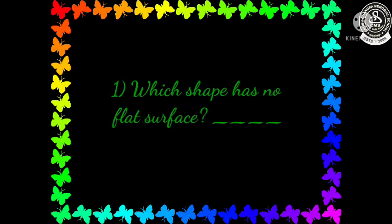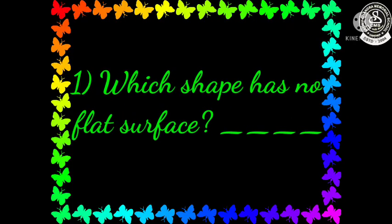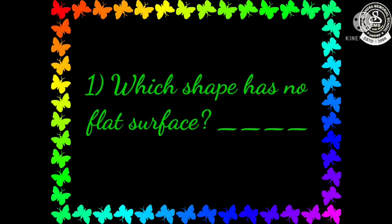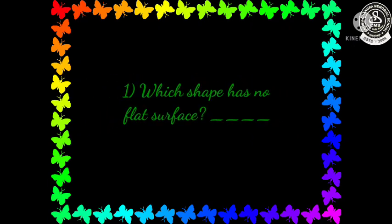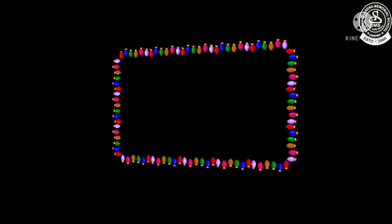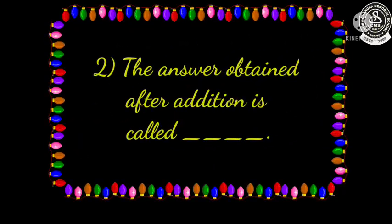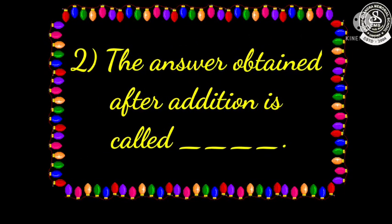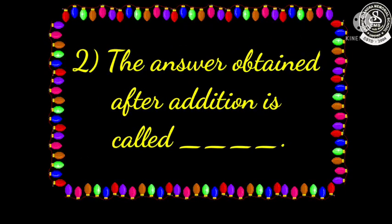Here is question number one: which shape has no flat surface — means no plane surface? You have to write that 3D shape name. Remember, 3D shape name. Next, number two: the answer obtained after addition is called dash.